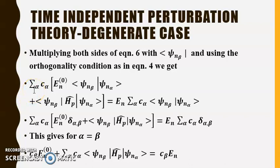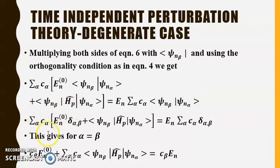Applying the scalar product with ⟨ψ_nβ|, we have Σ_α c_α [E_n^0 ⟨ψ_nβ|ψ_nα⟩ + ⟨ψ_nβ|H'|ψ_nα⟩] = E_n Σ_α c_α ⟨ψ_nβ|ψ_nα⟩. Using the orthonormality condition ⟨ψ_nβ|ψ_nα⟩ = δ_{αβ}, this becomes Σ_α c_α [E_n^0 δ_{αβ} + ⟨ψ_nβ|H'|ψ_nα⟩] = E_n Σ_α c_α δ_{αβ}.